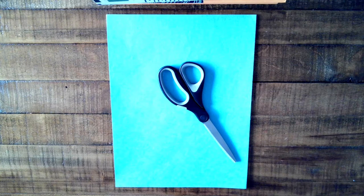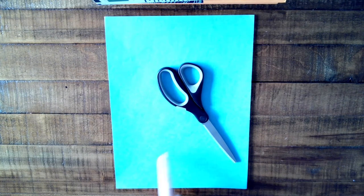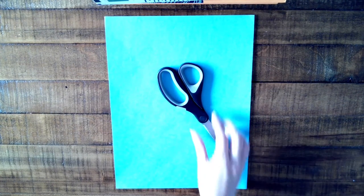To make origami frogs, you need a piece of paper and a pair of scissors. If you have origami paper, that is ideal, but if you don't, that's okay. I'll show you how to do it with just a regular colored piece of paper.